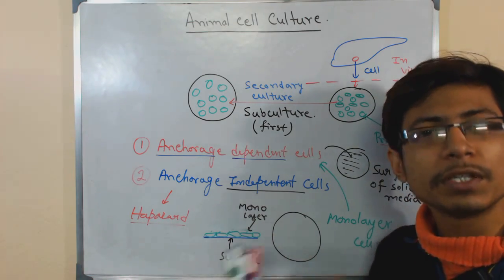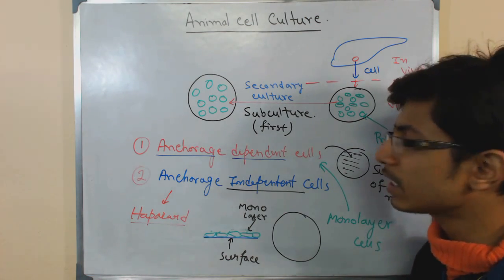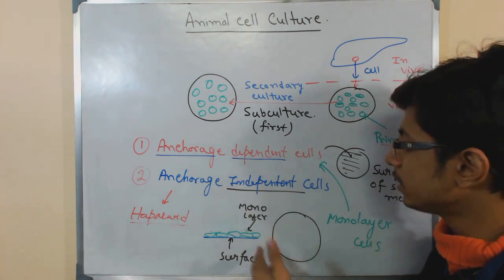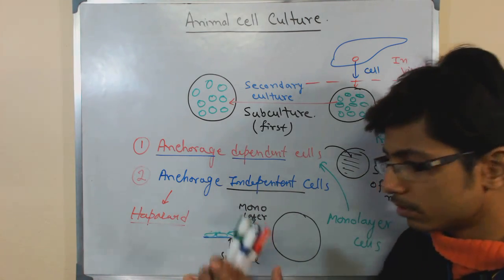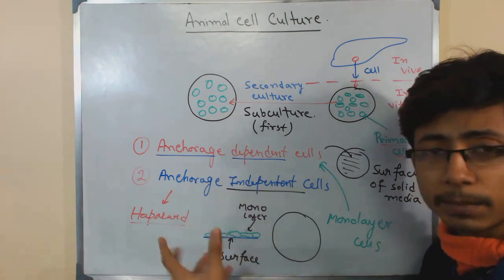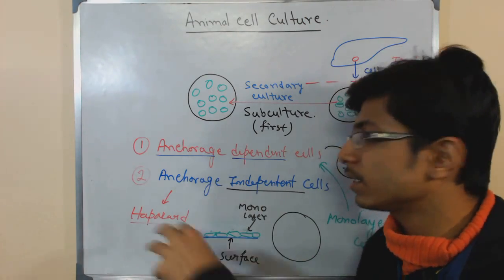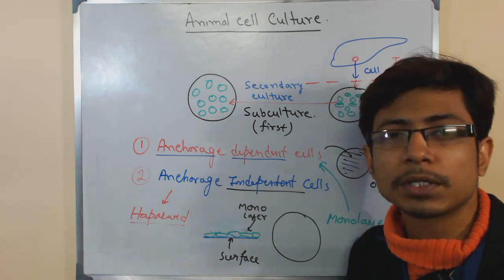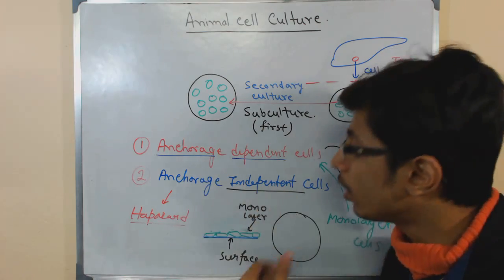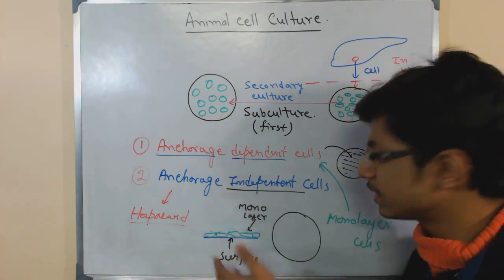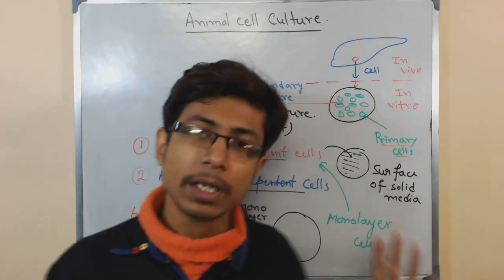Depending upon the cell type, the culture is also given a corresponding name. Anchorage dependent cells are termed monolayer cultures — it is a solid culture, also called anchorage dependent culture. Anchorage independent cells have a culture termed suspension culture, because they grow in suspension. The flasks used may sometimes require simply placing the cells in the flask, but sometimes they require stirring or shaking of the flask. Shaking or stirring incubation is required for anchorage independent or suspension cells to grow. On the other hand, anchorage dependent cells can easily grow by placing them into the incubator — no shaking or stirring is required — but the number of cells produced will be less.